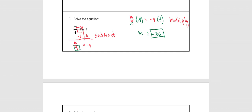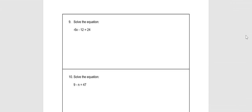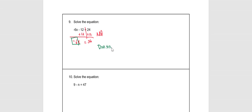When typing your answer in the canvas quiz, there shouldn't be any space between characters. Next, we eliminate negative 12 by the inverse, which is plus 12. We bring down negative 6x; 24 plus 12 equals 36. So we have negative 6 times x — the inverse is division — so we divide both sides by negative 6. Therefore x equals 36 divided by negative 6.